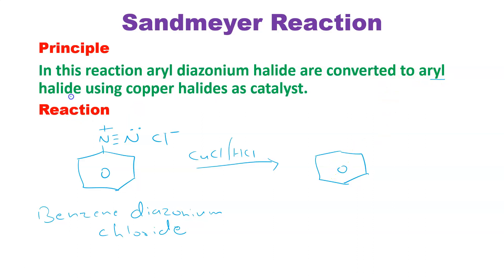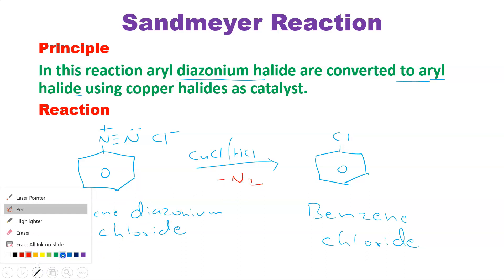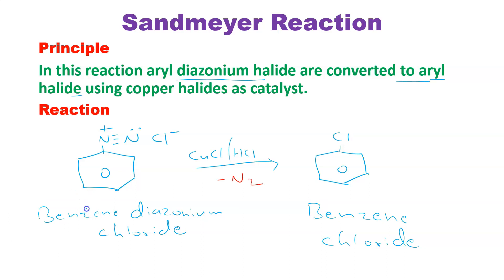In the presence of catalysts such as copper halide and HCl, we get the final compound — aryl halide. Aryl halide means it is having a substitution of a halide on the benzene ring. The particular name for this compound is chlorobenzene. The role of the catalyst is that it initiates the reaction but is never in the end product. The Cl has been substituted on the benzene ring and nitrogen gas is evolved from this reaction.